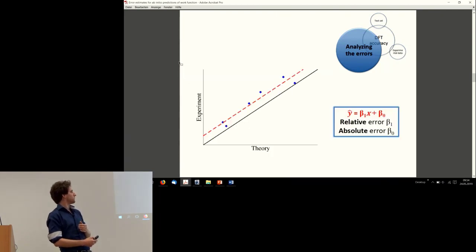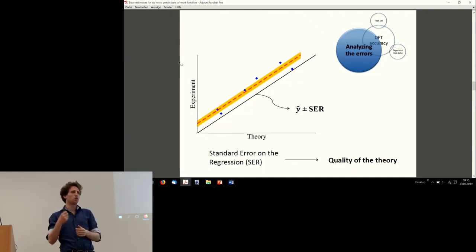Let's get to the statistics here. We want to correct for predictable errors. You can do it in multiple ways, as Pascal showed you. In this case a linear regression works very well. You end up with a relative error and an intercept for your predictable part of the error. That's interesting, but really we're interested in what is the quality of our theory, of PBE or LDA respectively. Then you come up with the other part of your regression, namely the standard error on the regression. That's really the quality of your theory—that's what's going to tell you how accurate is my functional.